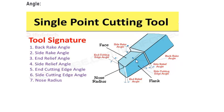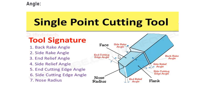Back rake angle is now clear. Next is the side rake angle. The side rake angle is the slope of the face — it is the angle of the face along the side. The side rake angle helps reduce friction. Back rake angle and side rake angle — hope you all have understood.